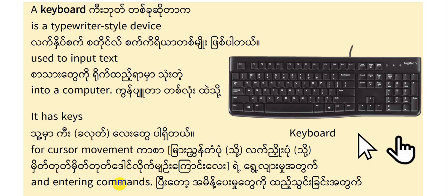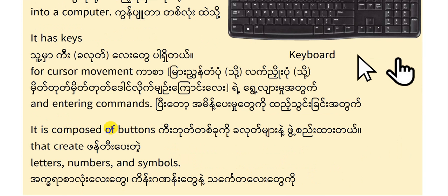Entering commands. A keyboard is composed of buttons that create letters — A, B, C, D — and numbers.